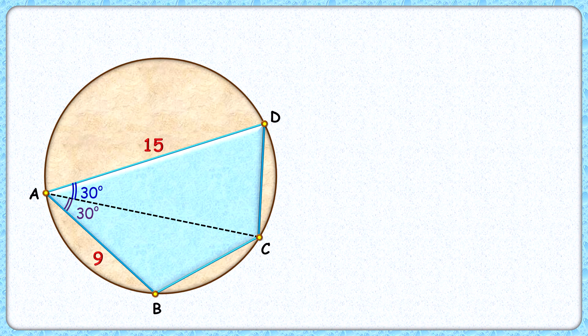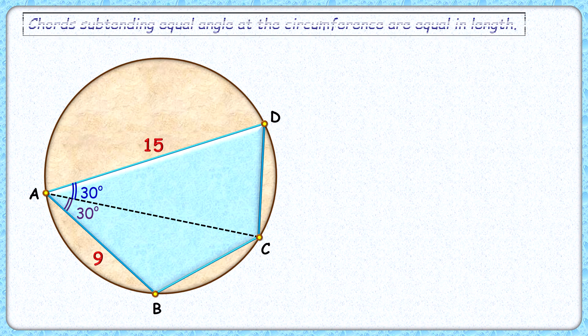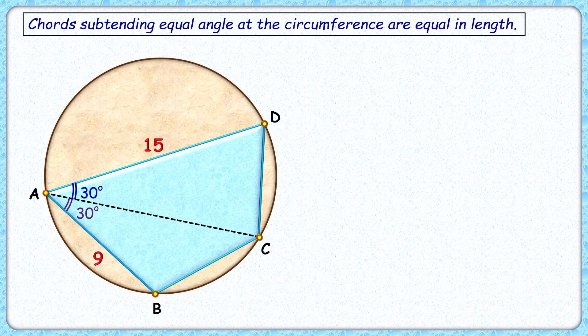We know that in a circle, equal chords subtend equal angles at the circumference. This theorem is true vice versa also - if two chords subtend equal angles at the circumference, then they have to be equal in length. Here, DC and CB are two chords that subtend equal angles at the circumference, and thus these chords have to be equal in length. So if DC length is x cm, CB length will also be x cm.